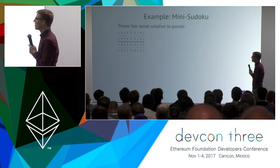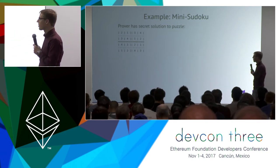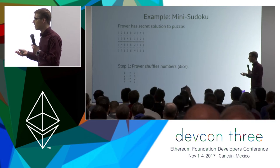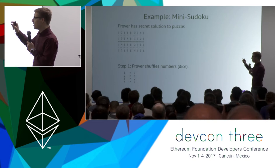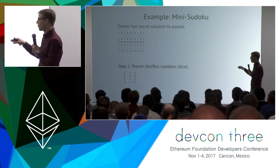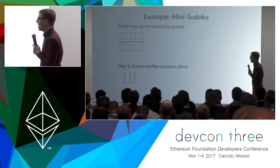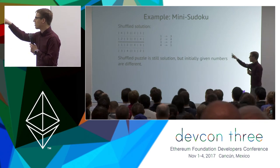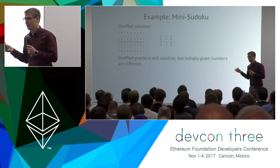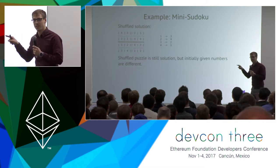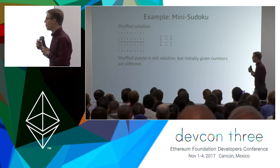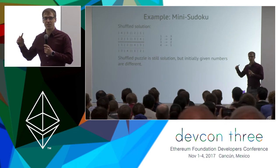The prover has the secret solution to the puzzle. The first step: the prover shuffles the numbers using the dice to create a replacement. She doesn't move numbers on the board but replaces each number by a different one — each one becomes three, each two becomes four, each three becomes two, each four becomes one. Because of the specific properties of the Sudoku problem, the shuffled solution is still a valid solution: each number still appears exactly once in each row, column, and sub-square.